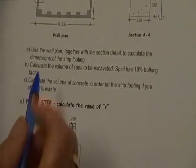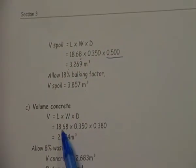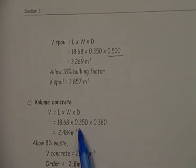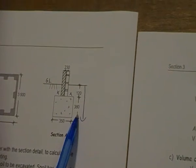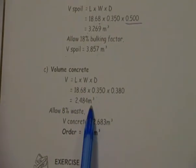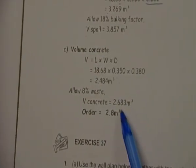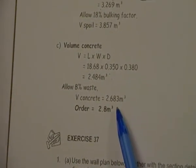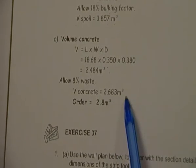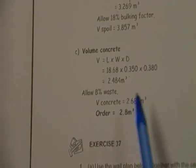If you look in the question for the concrete in C, it's asking us for concrete for the strip footing and 8% waste. We use the same length figure, we use the same width figure, but we go to our drawing and our concrete is only 380. So we do the counts on that, and then we add our 8% waste. We have to remember that concrete is in orders of increments of 0.2, so we have to round that up to 2.8 meters cubed.